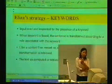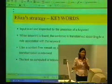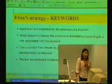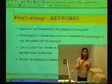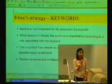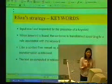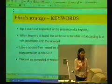ELISA's strategy is just like what I said — using keywords. The input is read and inspected for some keyword. When the keyword is found, the sentence is transformed or changed according to a rule associated with that keyword. So the people who wrote ELISA's program had to define rules that match with the keywords. When a keyword is found, use the corresponding rule to generate a sentence. Otherwise, when no keyword is found, ELISA uses something called a content-free remark.